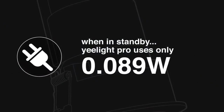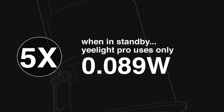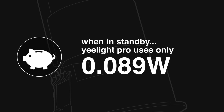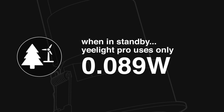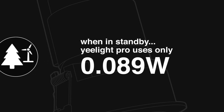Yelight Pro lights have the lowest standby power usage of any lights we've ever made, using only 0.089 watts per device, which is about 5 times lower than many other lighting brands on the market. This not only saves you money on your electricity bill, but it's also a lot more environmentally friendly.